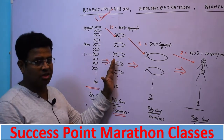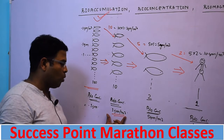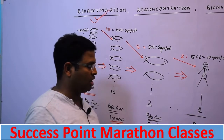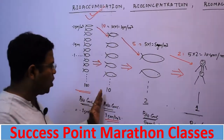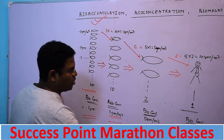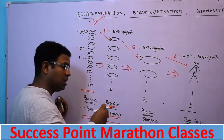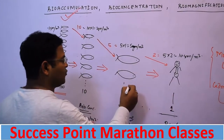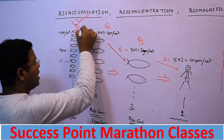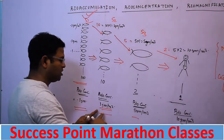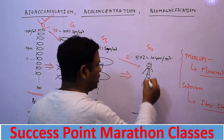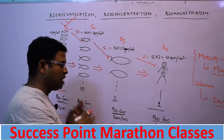After bioaccumulation, as the fish are eaten by larger fish, the concentration increases. The bioconcentration at each species level is: Species 1 = 0.1 gram per meter cube, Species 2 = 1 gram per meter cube, Species 3 = 5 gram per meter cube, and the human being (Species 4) = 10 gram per meter cube.